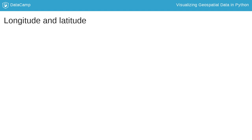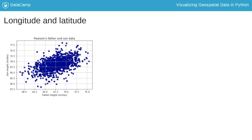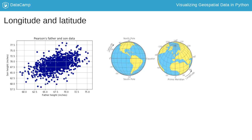Traditionally, scatter plots are used to show how two variables are related to each other. Here we have a scatter plot of the father and son heights used by Carl Pearson to explore regression in the early 1900s. We can borrow the plotting mechanism of a scatter plot to show location because latitude and longitude lines draw a grid.